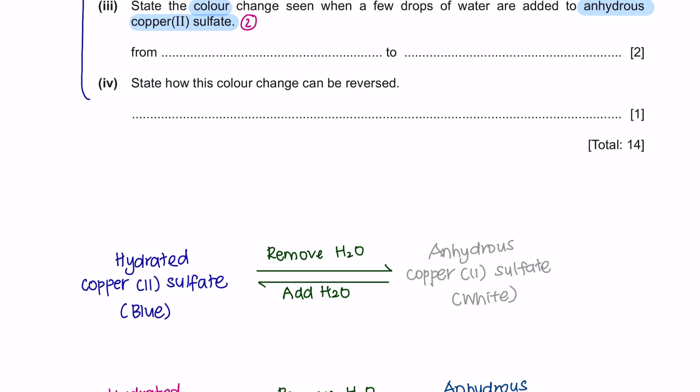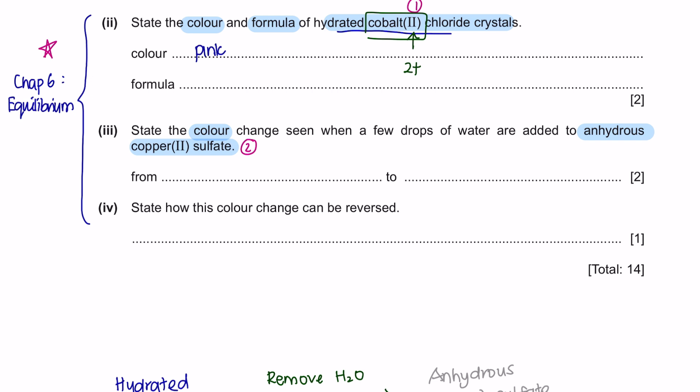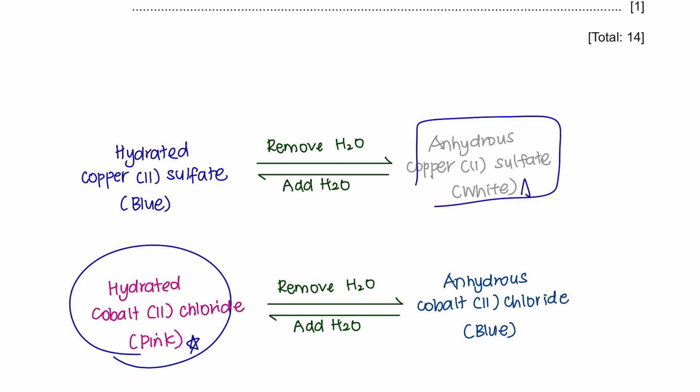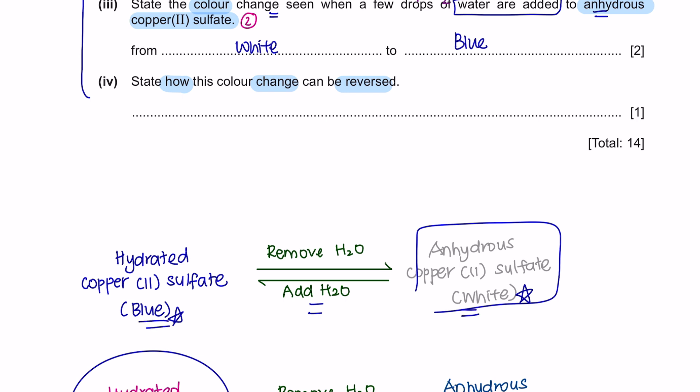The color for hydrated cobalt chloride is pink. Now we're going to look for the formula. This is cobalt with roman 2 in brackets. Roman 2 is its oxidation number, so the charge for cobalt is 2 plus. Chloride is from group 7, so it will be Cl minus 1. To come up with the formula, we will take the number on the charge and cross it to the other side, so the formula is cobalt chloride 2, CoCl2. Next, state the color change when a few drops of water is added to anhydrous copper sulfate. Anhydrous copper sulfate is white, and when added water, it turns blue. Lastly, state how this color change can be reversed. If you want to reverse from blue to white, you're going to remove water, so you can do that by heating up the hydrated copper 2 sulfate crystals to remove the water.